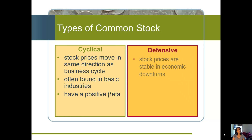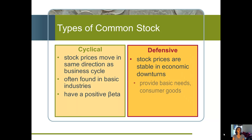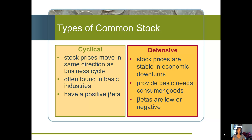Cyclical stocks are stocks where their prices move with the business cycle. The business cycle has these peaks and valleys, and cyclical stock prices move along with those same peaks and valleys. These are typically restricted to certain industries where those industries have similar peaks and valleys.